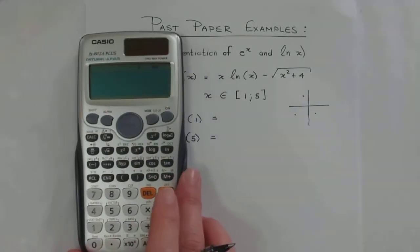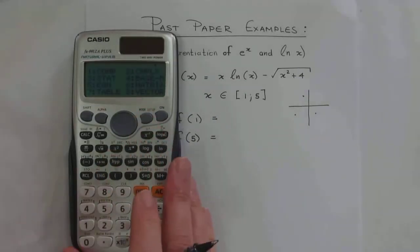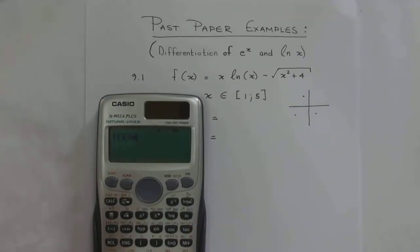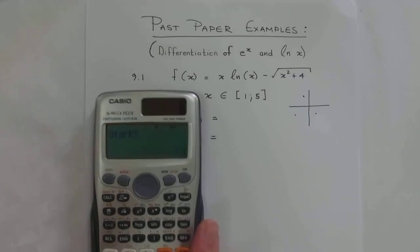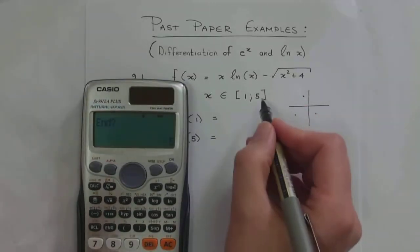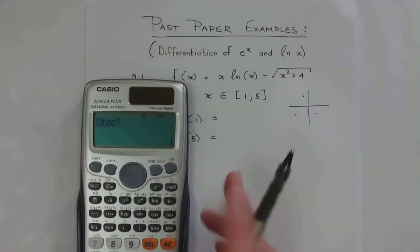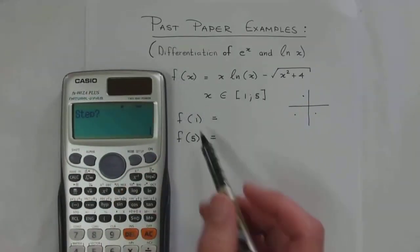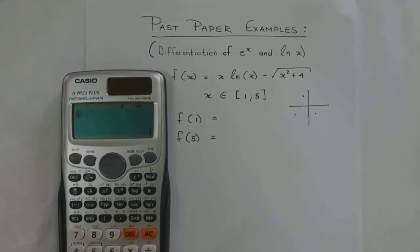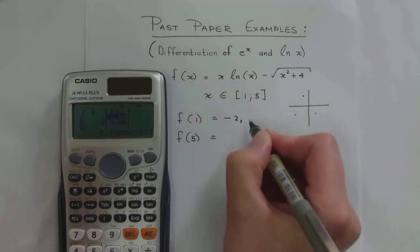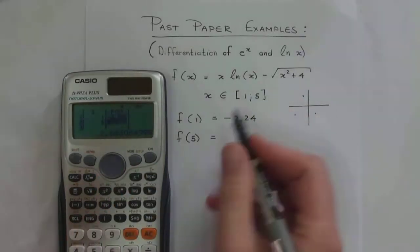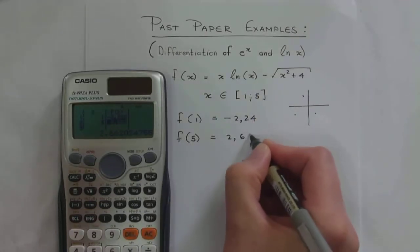Since I'm pretty lazy, I'm going to use my table function so I don't have to type this in twice. So f(x) = x·ln(x) minus the square root of x squared plus 4. I press equal, start at 1, end at 5, and step in 4 so it doesn't give me all the in-between values. So f(1) is equal to −2.24 rounded to two decimal places, and f(5) is equal to 2.66 rounded to two decimal places.